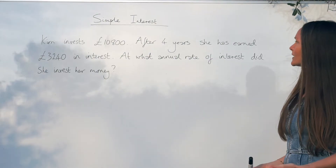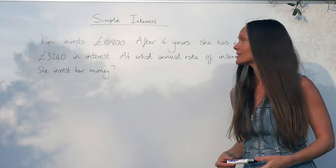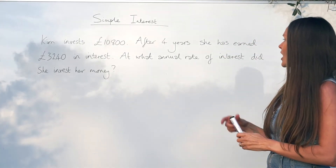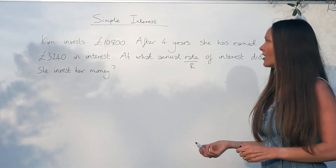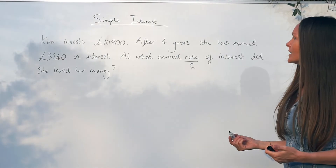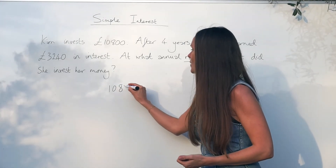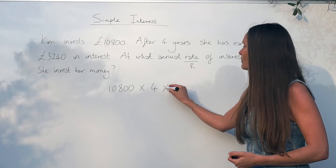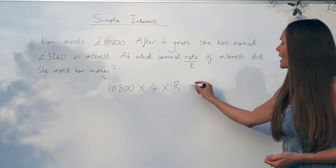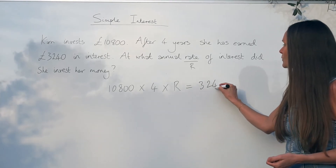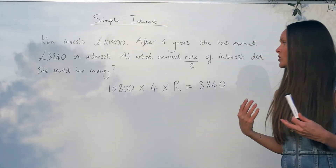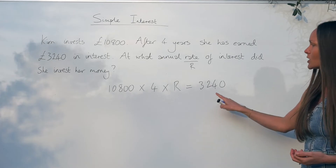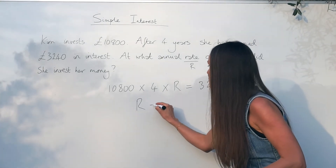In the last question it says: Kim invests ten thousand eight hundred pounds and after four years she has earned three thousand two hundred and forty pounds in interest — at what annual rate did she invest her money? I'll replace the annual rate with the letter R. The equation is: 10,800 × 4 × R = 3,240. Similar to the last question, we're solving this equation to work out R, the rate of interest.